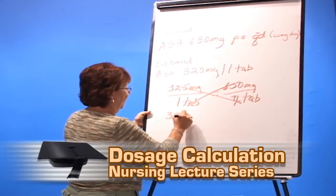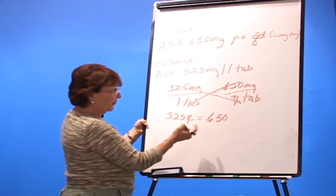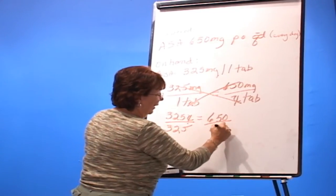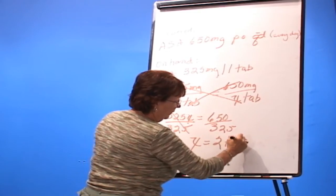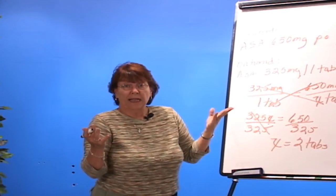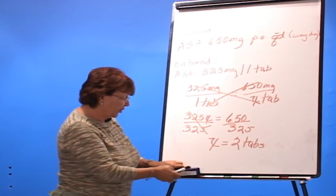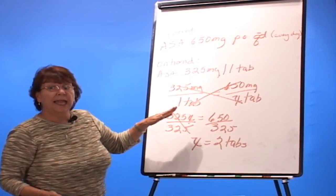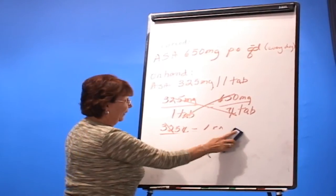So it's 325x equals 650. We need to get x by itself — same step as before. X equals 2 tabs. You can do ratio and proportion either way: desired over half, or the long way to the side. The key to doing pharmacology math is to make sure that you do every step, don't take shortcuts, and label, label, label — so you understand exactly what it is that you want to give your patient.